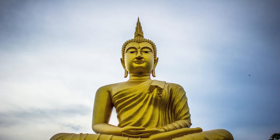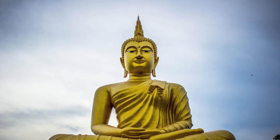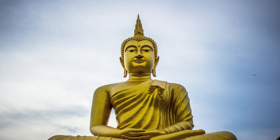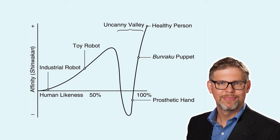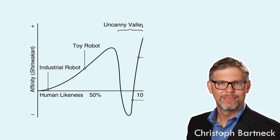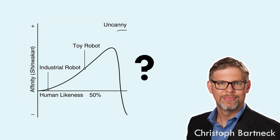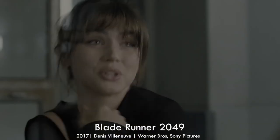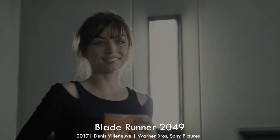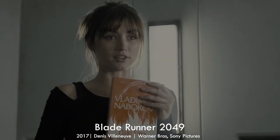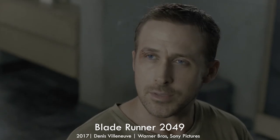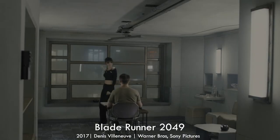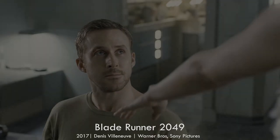Some, like Christoph Bartnick at the University of Canterbury in New Zealand, think there is no valley — just a cliff. He has been unable to find anything on the upward section of the valley's curve. However, this may not always be the case. While today robots like those seen in Terminator or Blade Runner don't exist, with the way technology is advancing it is only a matter of time. Perhaps then, the border between machine and human will be fully blurred.